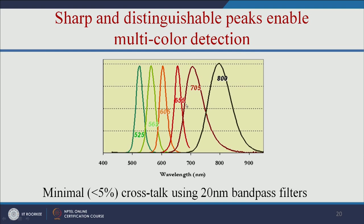Another advantage is that with respect to size, quantum dots give different kinds of fluorescence. When using traditional organic dyes, there is a chance for overlapping of fluorescence. With quantum dots, there is no overlapping of fluorescence and no crosstalk.